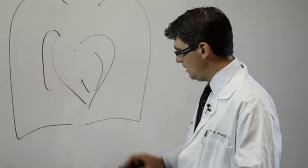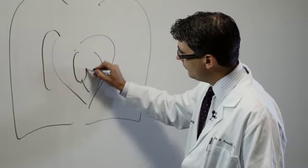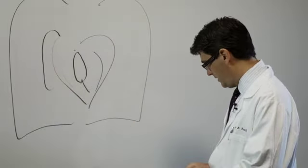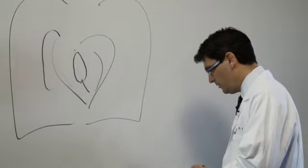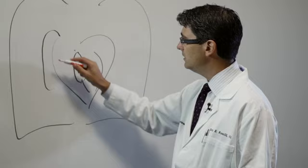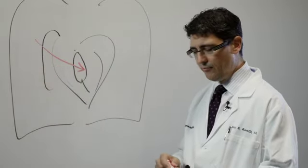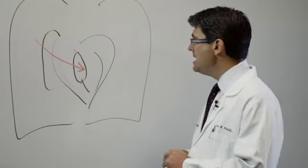The mitral valve sits right in the middle of the heart and keeps blood flow going in one direction. As blood comes from the lungs to the left side of the heart, it goes through that valve after it picks up fresh oxygen.